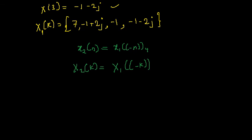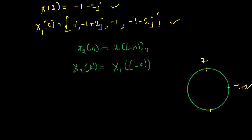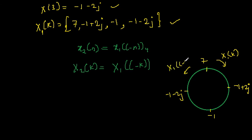I draw a circle and place the four values of X1(k) around it: X1(0) = 7, X1(1) = minus 1 plus 2j, X1(2) = minus 1, and X1(3) = minus 1 minus 2j. Reading clockwise gives X1(k). Reading anticlockwise gives X1 of minus k, which is X2(k).